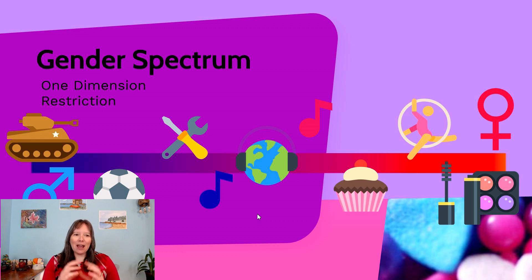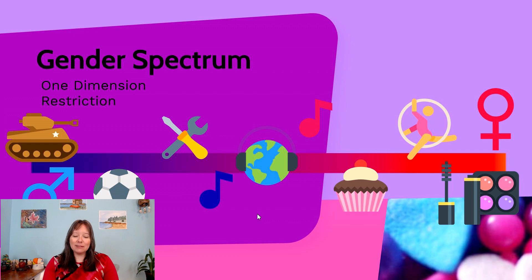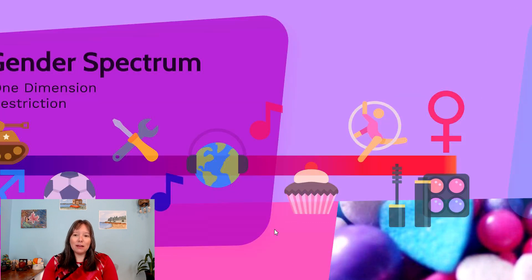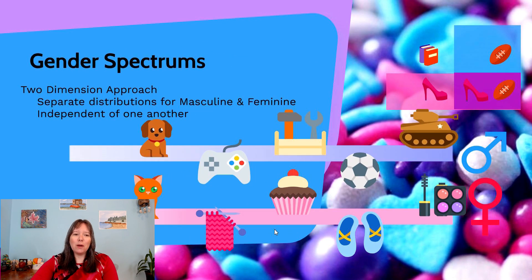However, the one-dimensional approach used from the 1970s wasn't perfect. It could still be a way of restricting gender expression and gender performance by identifying masculine and feminine things and using that to socialize girls to be girls and boys to be boys. Another big criticism is: what's really in the middle — is it a lack of femininity and masculinity, or is it both, or something different? Because of that, we moved to a two-dimension approach.